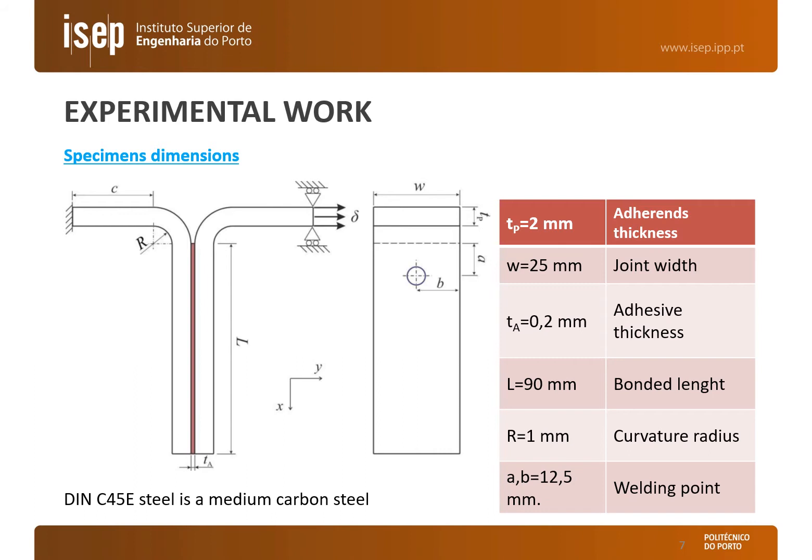Five specimens were tested for each type of joint at room temperature in an electromechanical tester equipped with a 100 kN load cell and a velocity of 1 mm per minute.